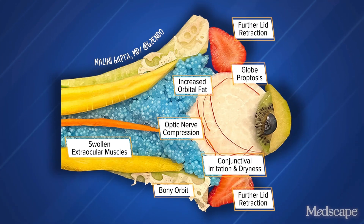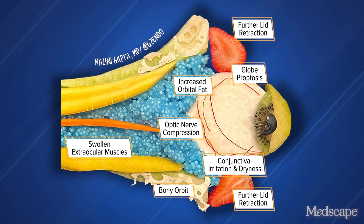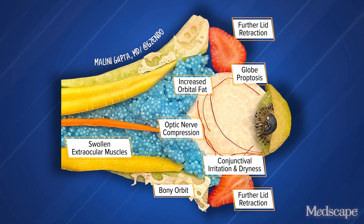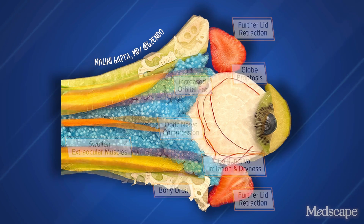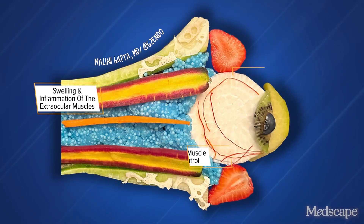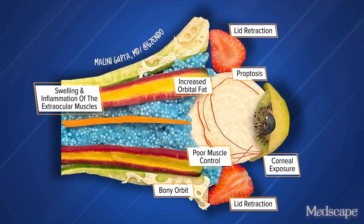Cells of the lacrimal glands express TSH receptors. The cytokine tumor necrosis factor alpha binds and results in altered regulation of pro-inflammatory and protective proteins. This changes the tear film. The cornea can become dry and can also experience reshaping into keratoconus.